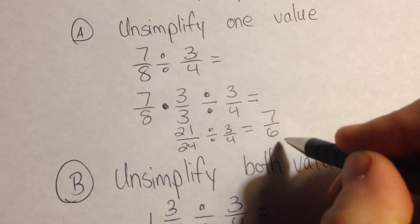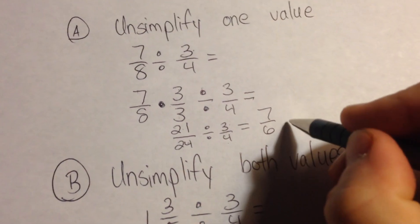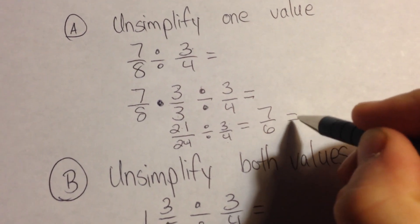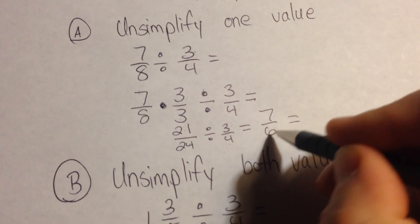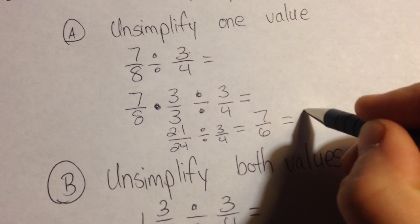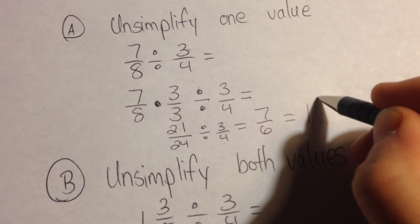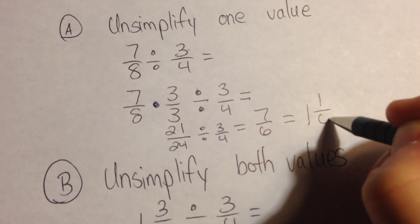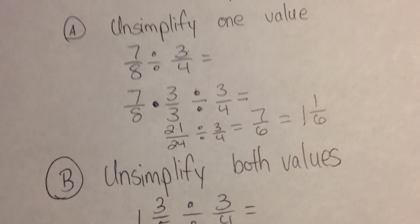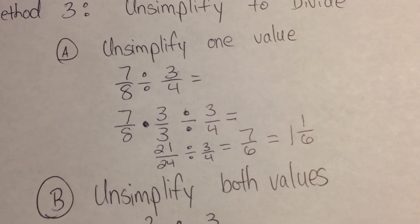And we'd need to write this in simplest form. I'm not going to write it down because I'm running out of room, so I'll put it right here next to it. 7 divided by 6. There it goes one time. We'll have a remainder of 1 over 6. So there you have unsimplifying with one value.